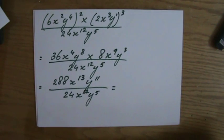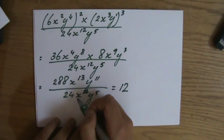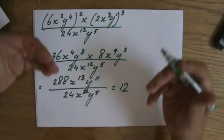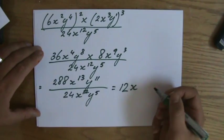So we have to simplify that now. And 288 over 24, that is 12. X to the power of 13 divided by x to the power of 12. Subtract the indices when the base is the same. Is x to the power of 1. So x.